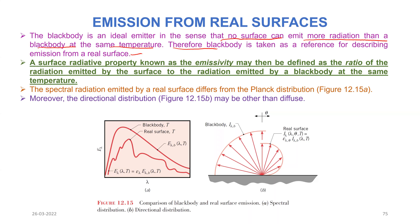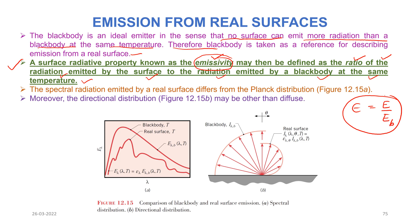Because the black body emits the maximum amount of radiation, it is taken as a reference for comparing its emission with that of a real surface. A surface radiative property known as emissivity is defined as the ratio of the radiation emitted by the surface to the radiation emitted by a black body at the same temperature. So emissivity equals emission from the surface divided by emission from the black body.